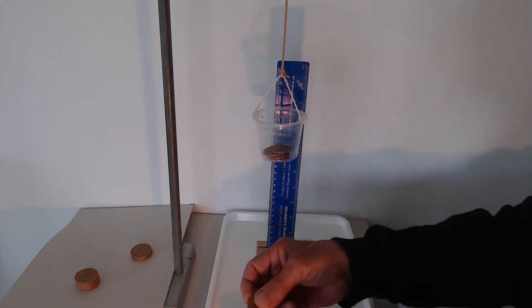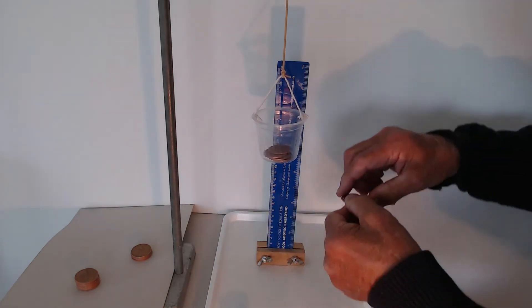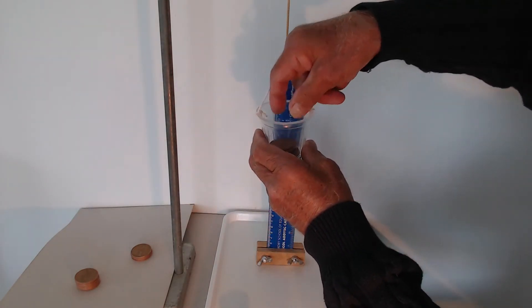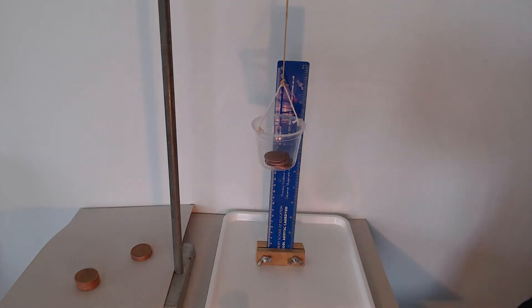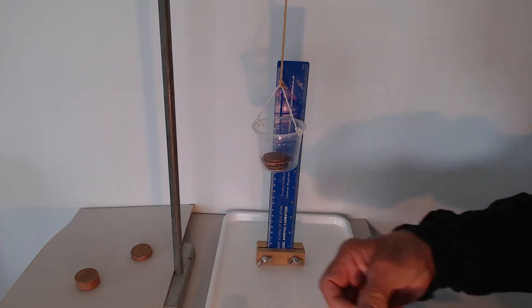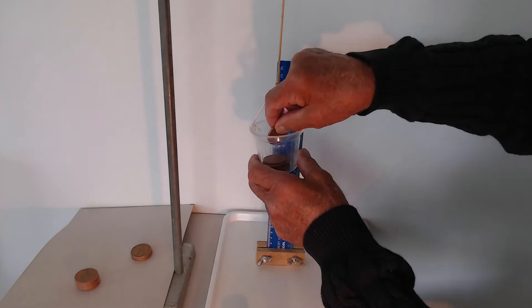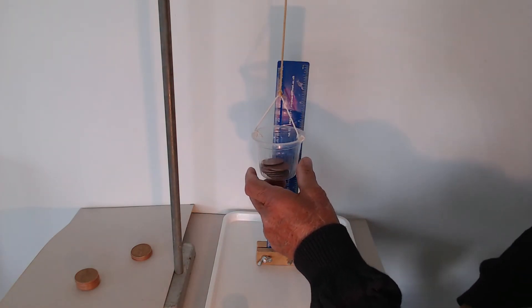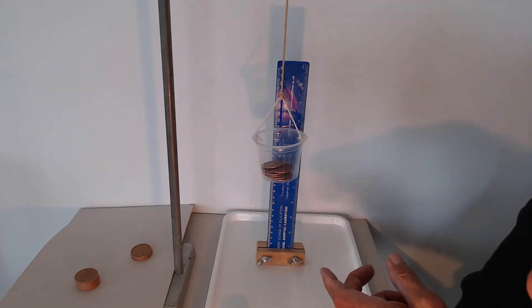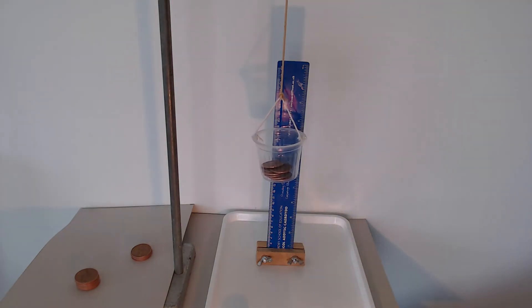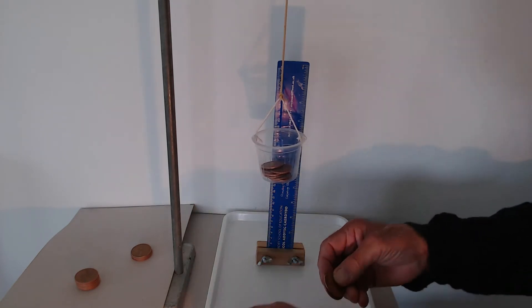The next two - these pennies are really very useful because they have a mass of almost exactly 10 grams - 24.0 there. So every two of these is an increase of 20 grams. Next one it's gone down quite a lot now, 22.2.